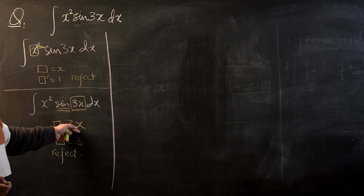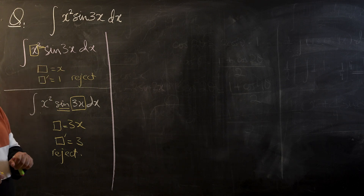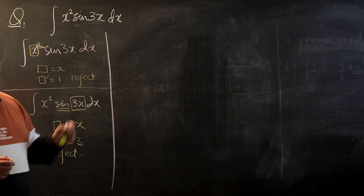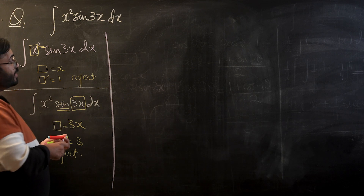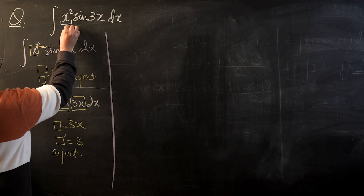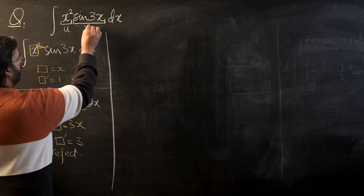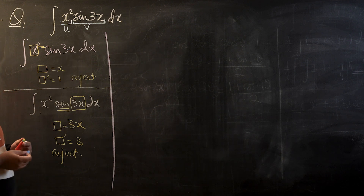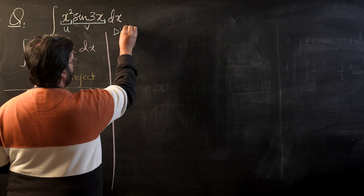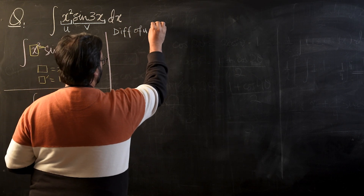Now that both operators have been rejected, we don't have any operator available to integrate directly. This is when we take the decision to use integration by parts. We will take x squared as u and sine 3x as v for our integral. We will always need the differentiation of u and the integral of v for the by-parts formula.